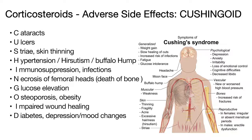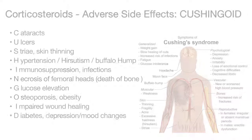Immunosuppression and infections; necrosis of femoral heads, which is death of bone tissue due to a lack of blood supply; glucose elevation; osteoporosis and obesity including the classic moon face; impaired wound healing; diabetes; and depression or mood changes. These numerous side effects of corticosteroids are the result of their diverse effects on numerous organ systems.